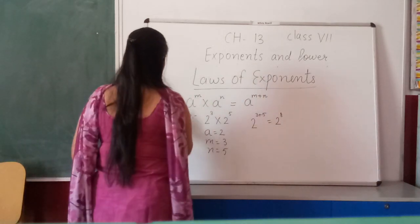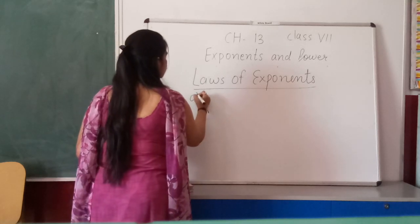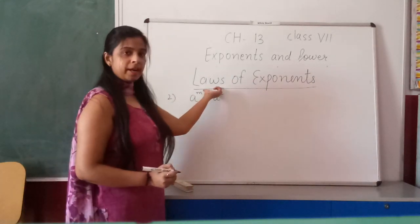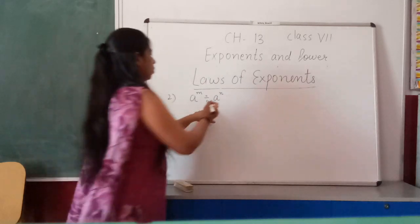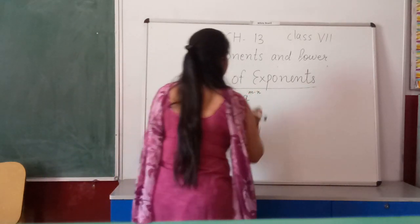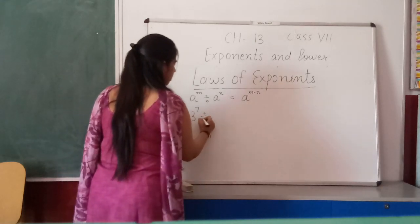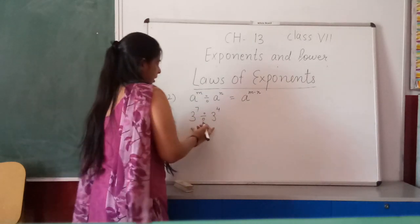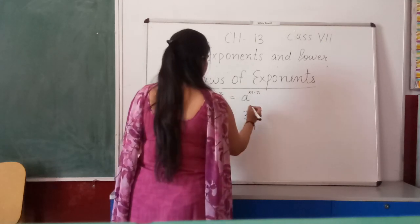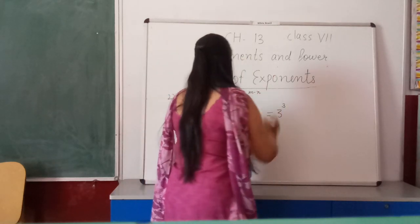The second law of exponents: a raised to power m divided by a raised to power n. The base is the same, the power is different, but the operation is division. In the case of division, we subtract both powers. The result is a raised to power (m − n). For example, 3⁷ ÷ 3⁴ = 3 raised to power (7 − 4) = 3 raised to power 3.